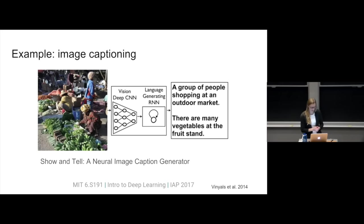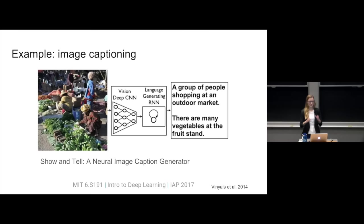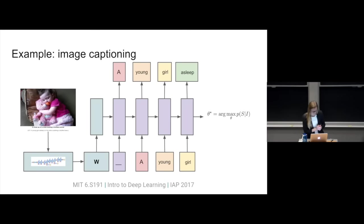Next I'll talk about image captioning, where you have an image and want to generate an entire sentence for it. It's different from the Flickr task where we just had tags — now we want a coherent sentence describing the image. The paper 'Show and Tell,' from 2014, had a simple model where they took the CNN part, which works really well on images, built an image embedding, and then fed the image embedding into an RNN, which works really well for generating language.